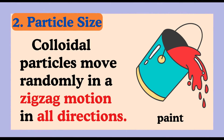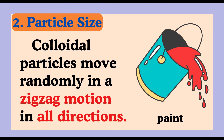Two: particle size. The particles in a colloid are larger than in a solution but smaller than in a suspension, typically ranging from one to one thousand nanometers. Example: paint is a colloid with pigment particles dispersed in a liquid medium. These particles are small enough to stay suspended but large enough to scatter light.